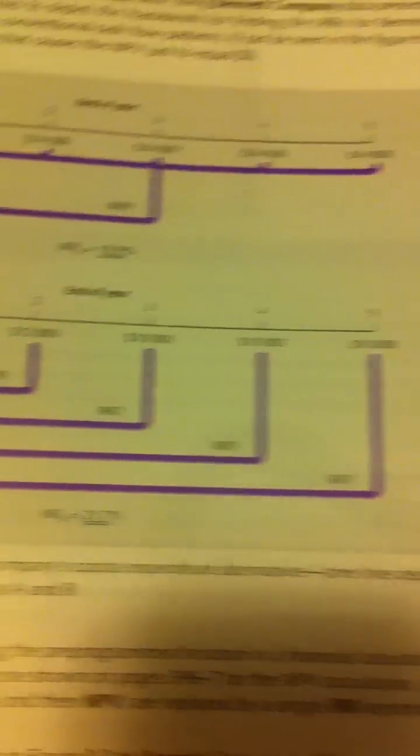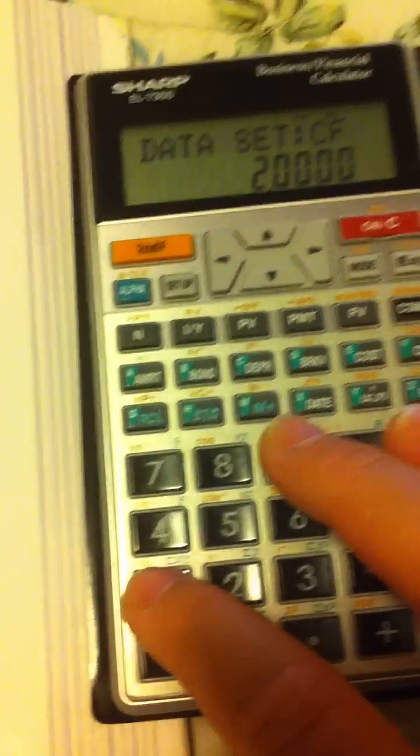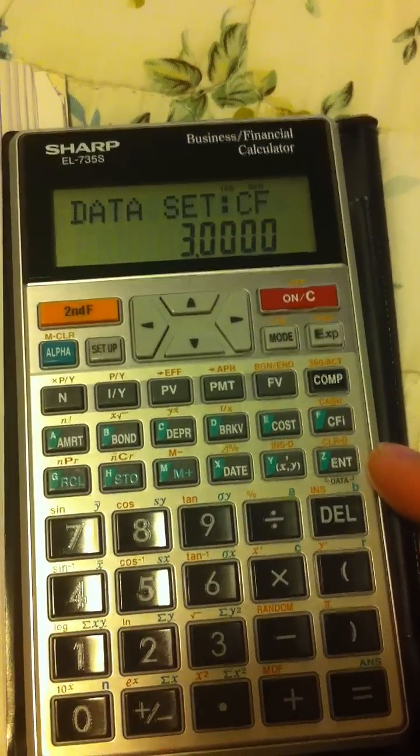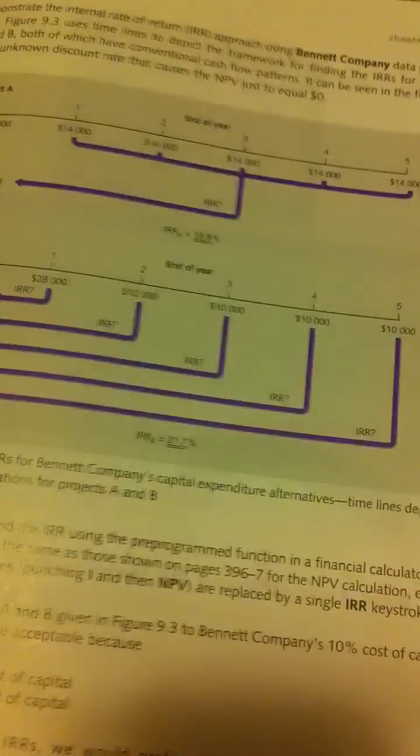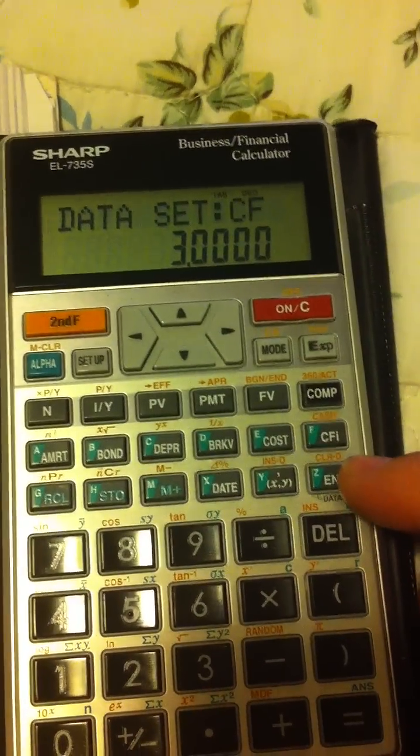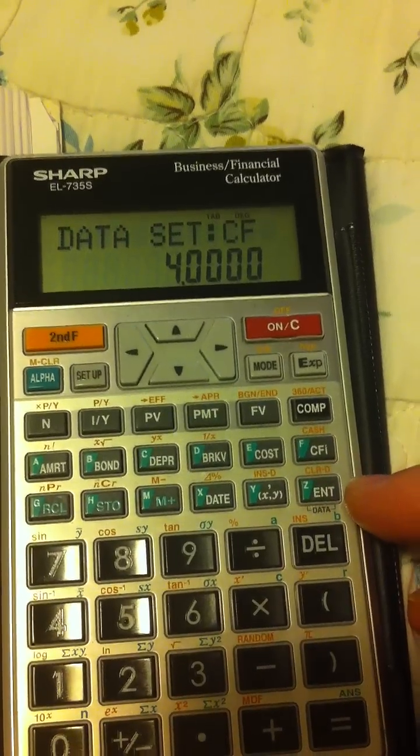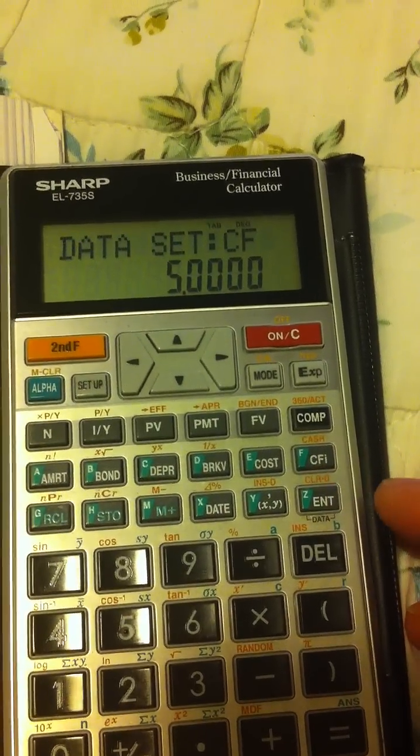Year 3 to year 5 are $10,000 each, so you put here 10,000 and ENT for year 3. Year 4 and year 5 are the same amount, so you just press ENT again for year 4 and again ENT for year 5.